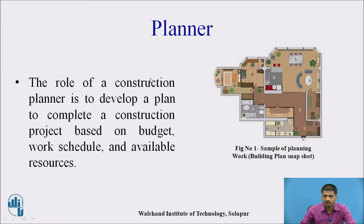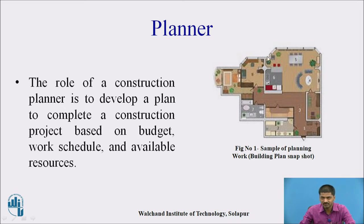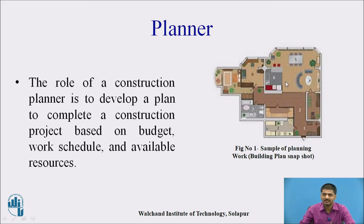First one: planner. Focus on this particular feature — sample of planning work. Basically three parameters we are going to consider: first, a simple plan for residential building; second, plan for commercial building; and third, industrial building. The main role of civil engineer is to first prepare a line plan, then if the third-party owner is satisfied, prepare a developed plan and proceed on the further steps.